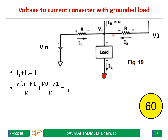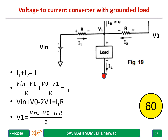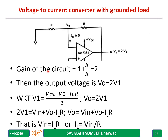...V0 minus V1 divided by R. So this becomes equal to IL. Rearranging gives the equation, and V1 equals Vin plus V0 minus IL times R. The gain of the circuit is 1 plus Rf by R1, as we all know, but both resistors are R in this case, hence the gain is 2.